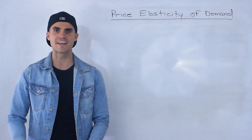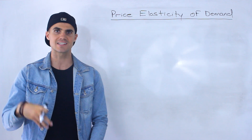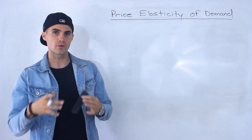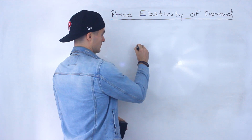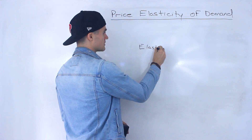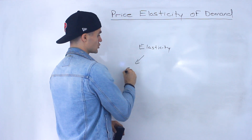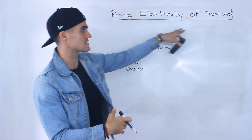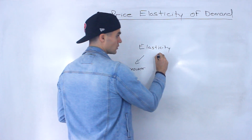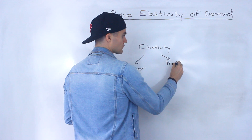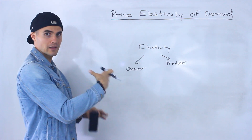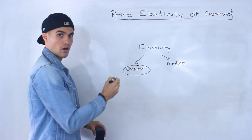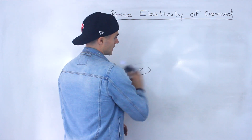Welcome back — Patrick here. Moving on to the next section in microeconomics, we're now going to talk about elasticity, and more specifically we're going to start the section off talking about the price elasticity of demand. Elasticity in general you can look at it from the consumer's perspective, which is what we're going to start off doing in this video, because we're looking at the price elasticity of demand — remember demand deals with consumers. But you could also look at it from the producer's perspective, and we'll be talking about how elasticity relates to supply later on in the section as well. But for now we're just going to be focusing on the consumer.